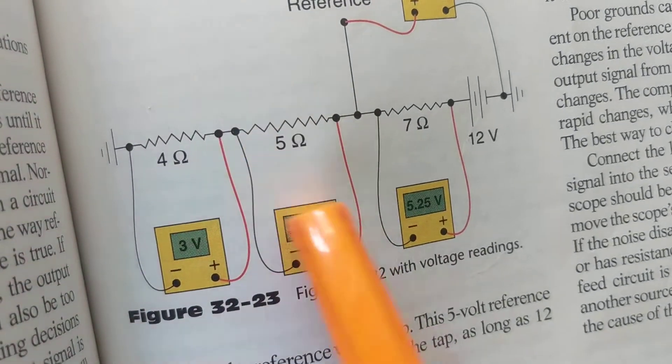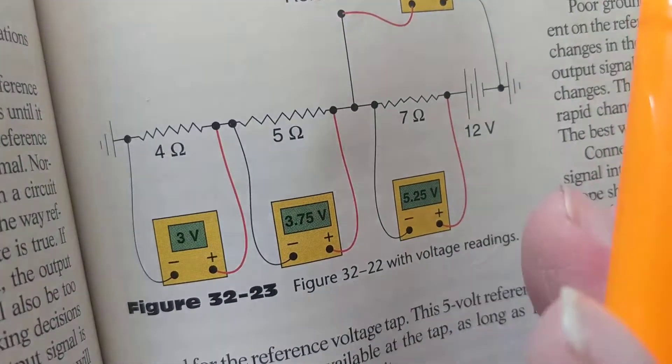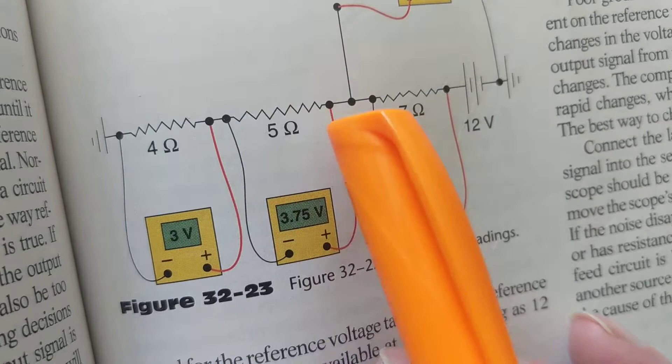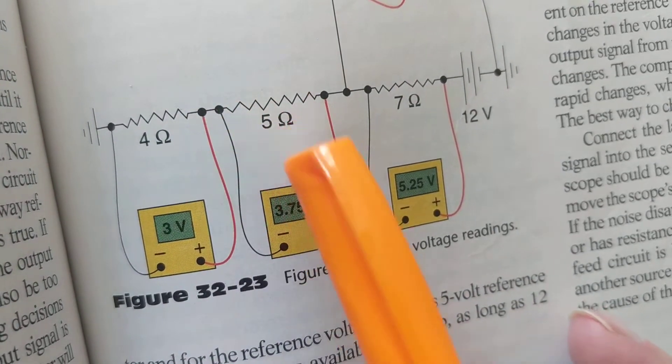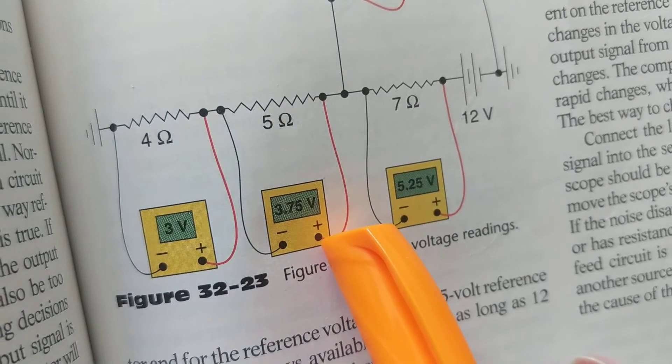This one over here has 5 ohms. The more resistance, the more the voltage as long as the current is the same, but we're not going to get into Ohm's law. So now this resistance is more than this, we're going to measure more. So now the black one is here, positive one is here, the red one.